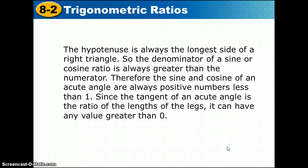Here are some important reminders. The hypotenuse is always the longest side of a right triangle, so the denominator of a sine or cosine ratio is always greater than the numerator. That means sine and cosine of an acute angle are always positive numbers less than 1. Since tangent compares the two legs, it can have any value greater than 0.